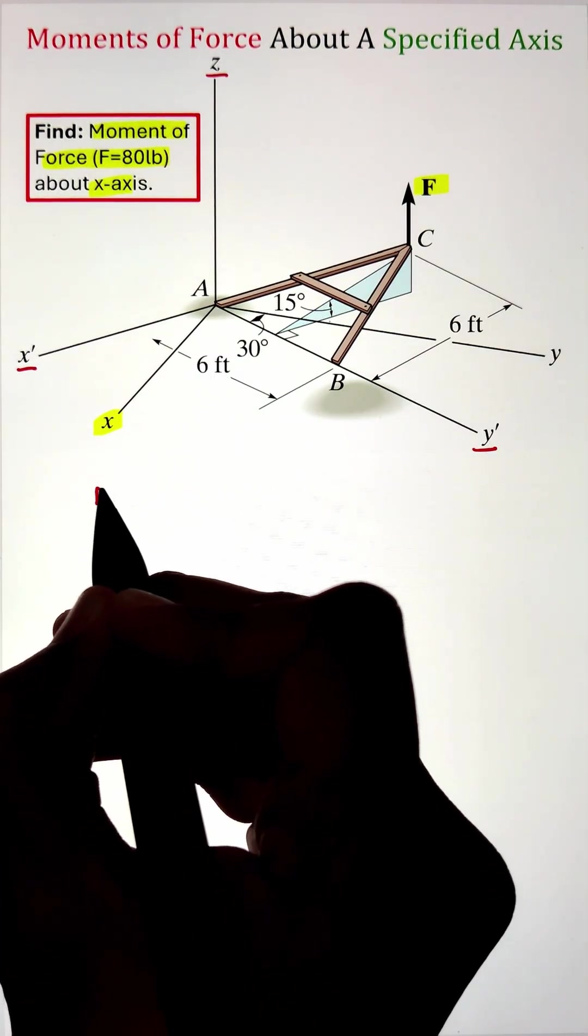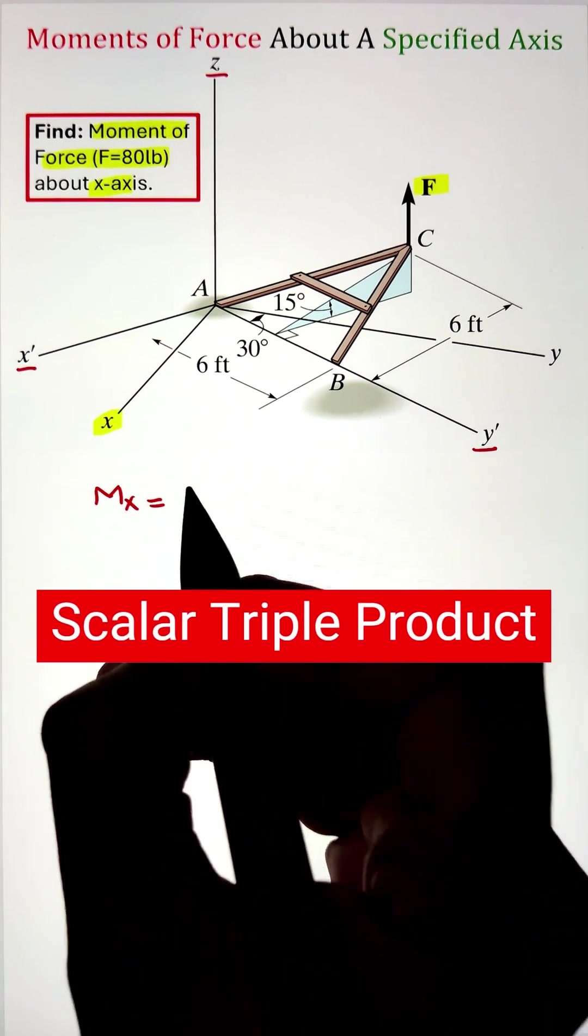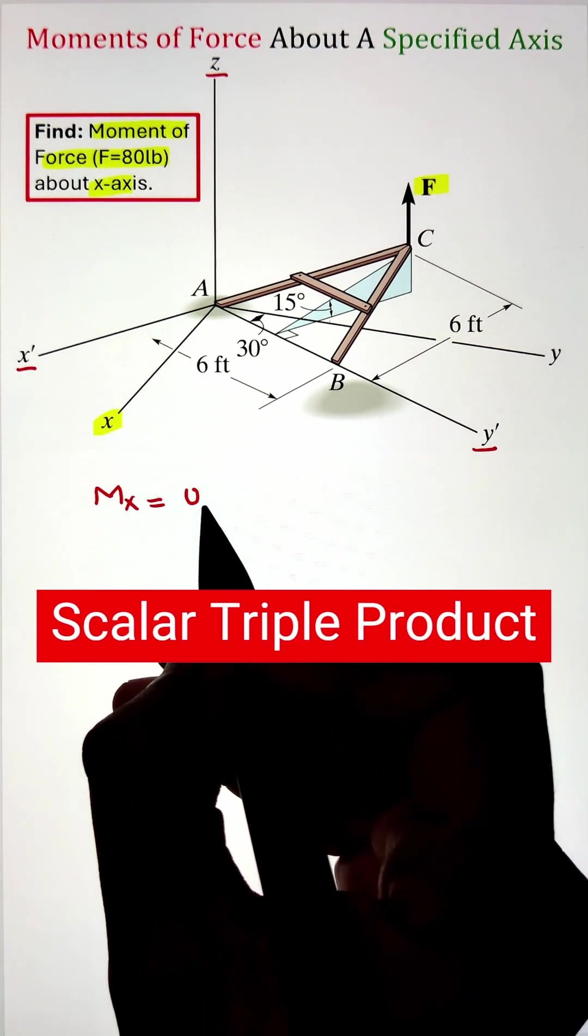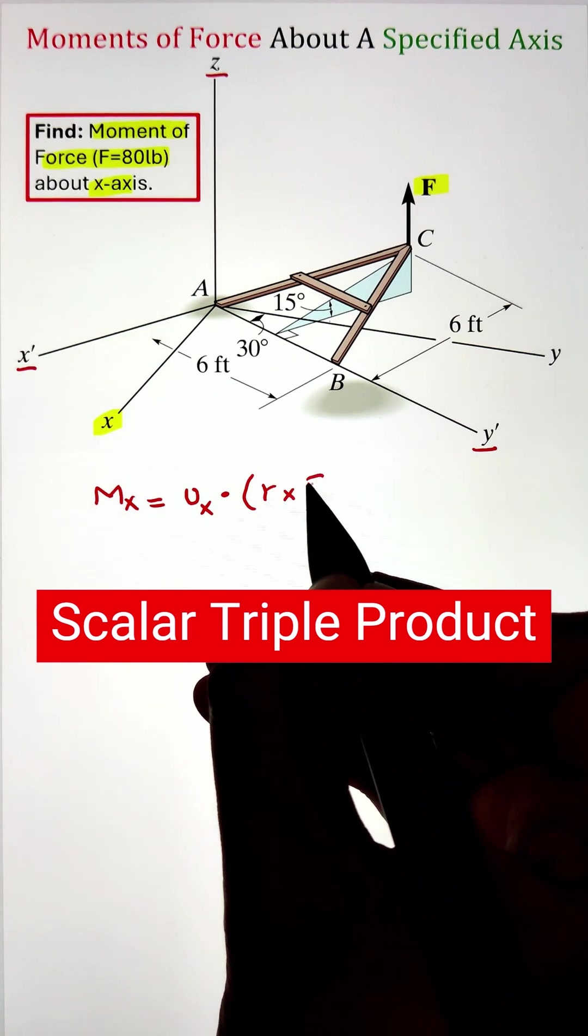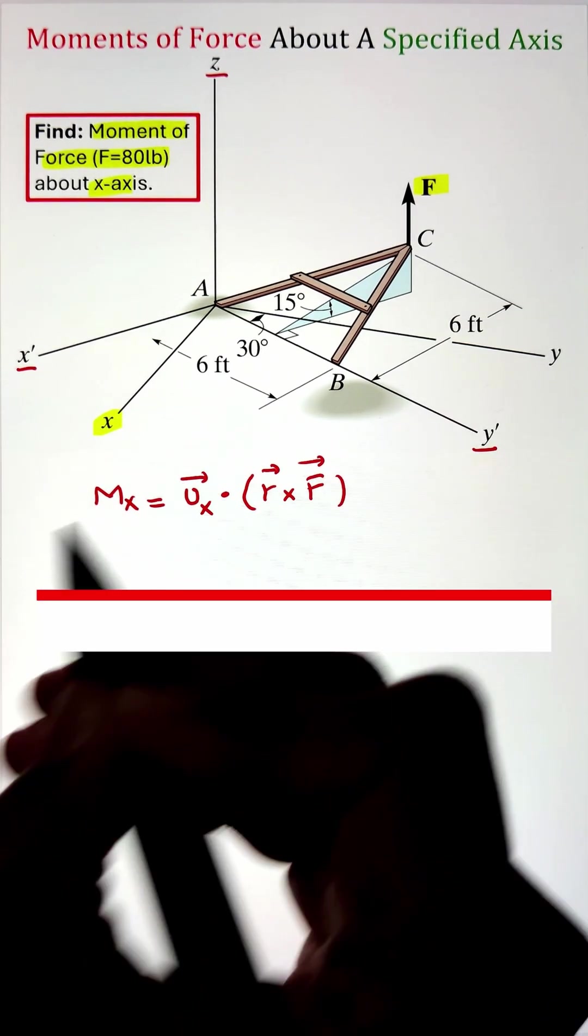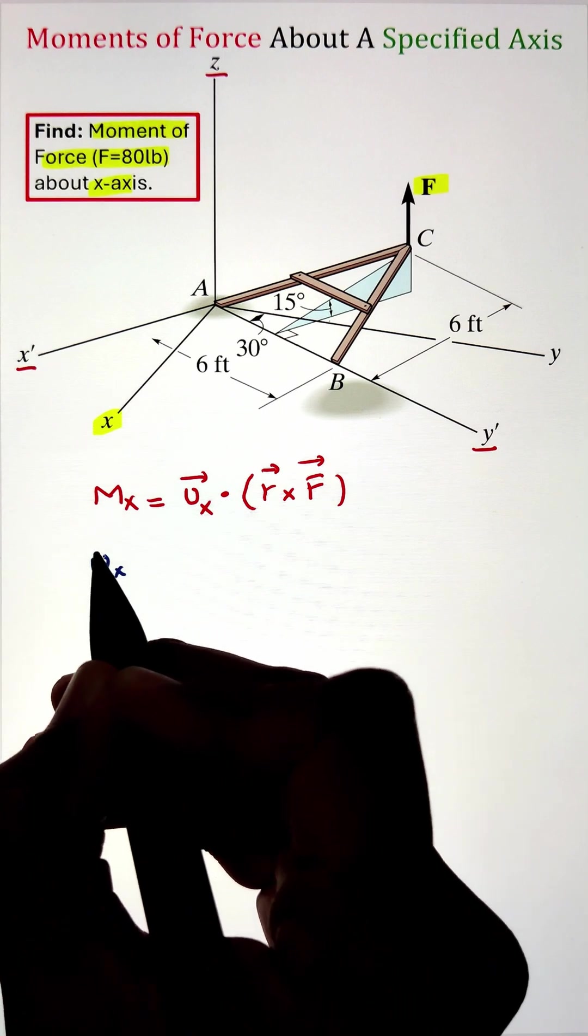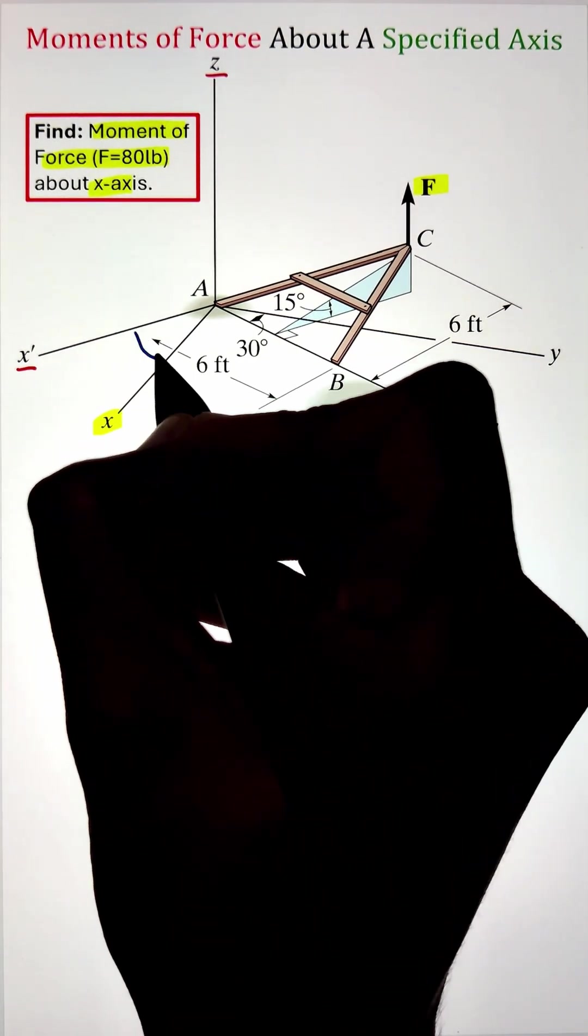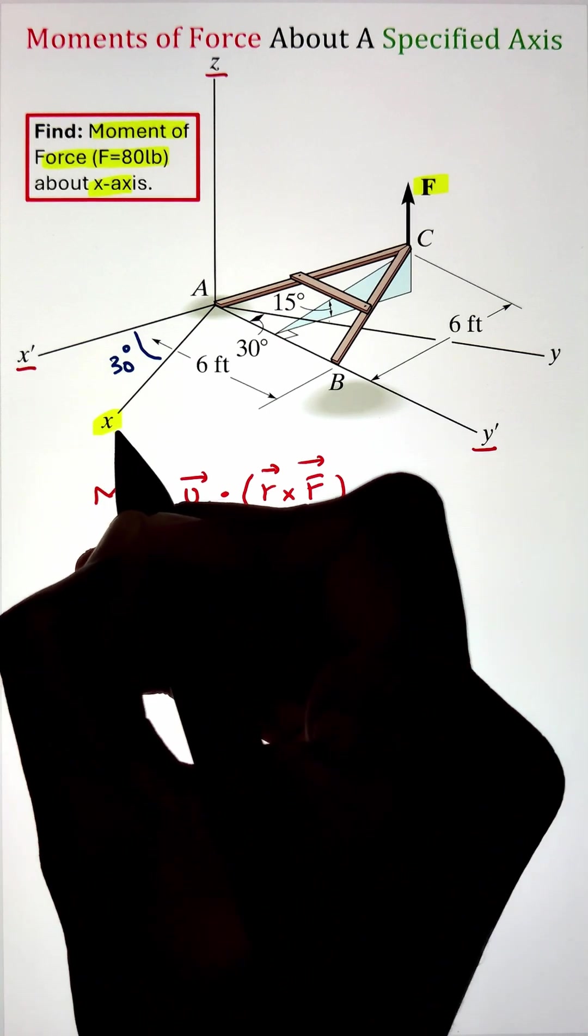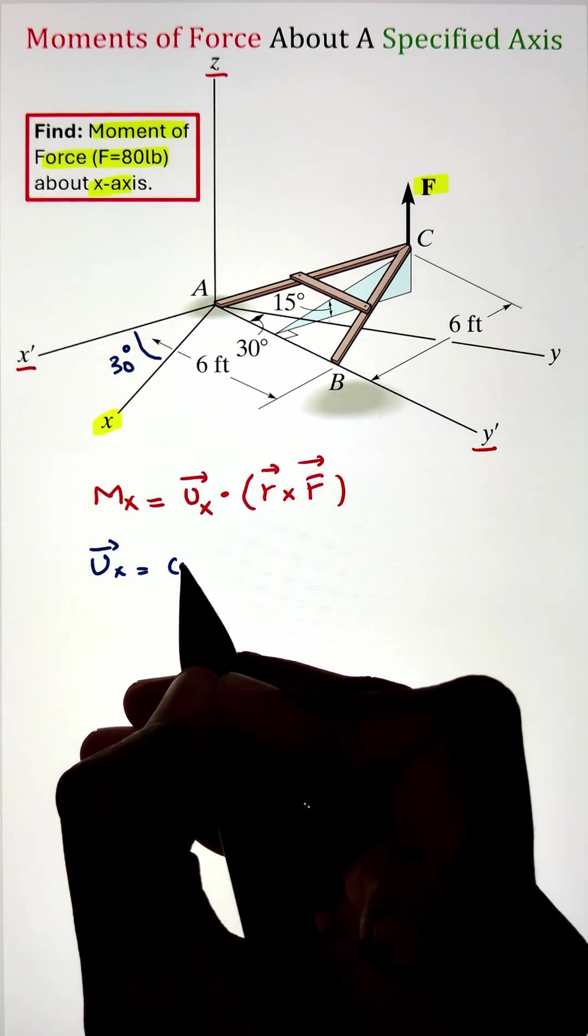Next, let's write our triple scalar product, that is a product between three vectors that gives us a scalar quantity. Starting with the very first vector, the unit vector of the direction across which we are calculating the moment. Next I have a position vector r that starts from any point on the direction at which we are calculating the moment and heads towards the line of action of the force. And finally we have the force vector.